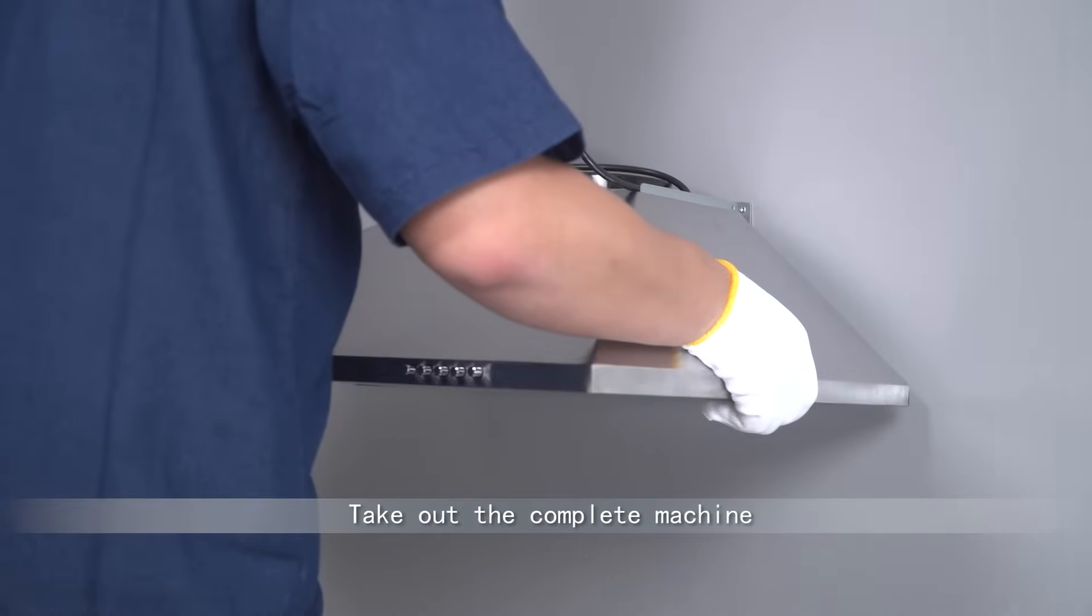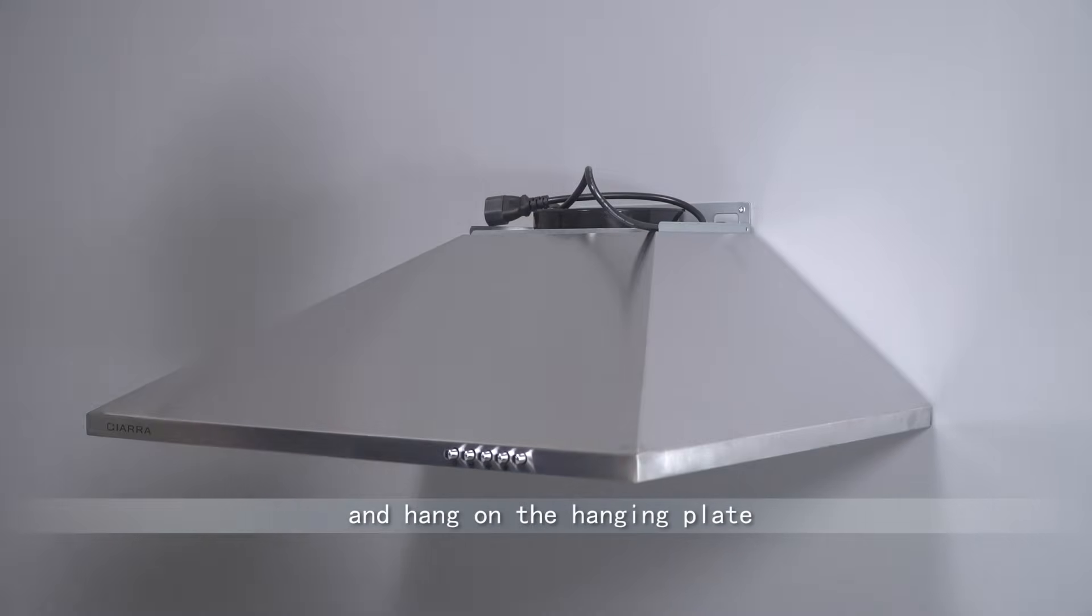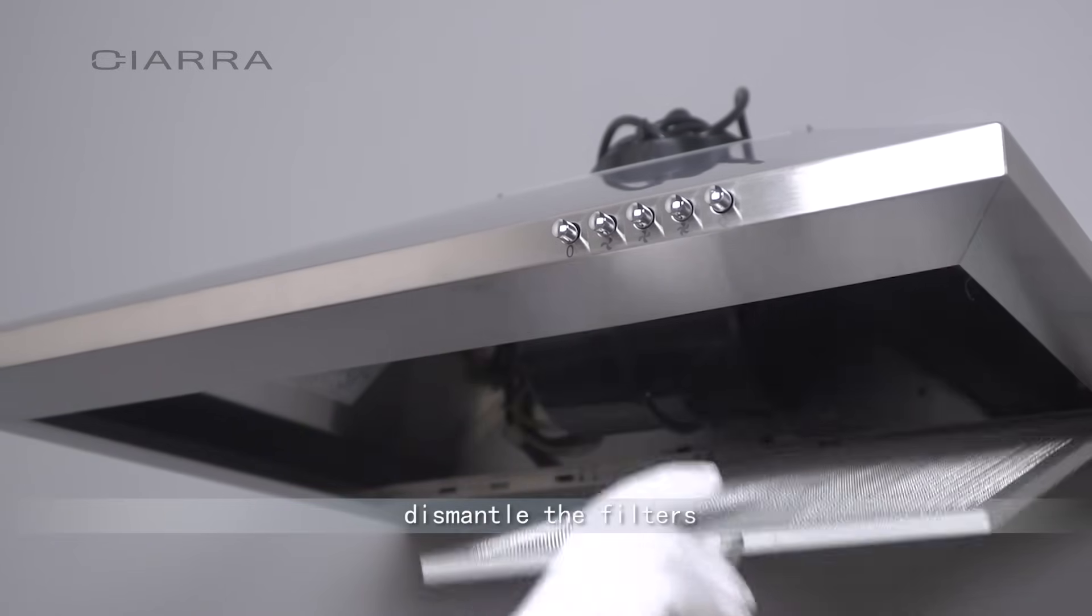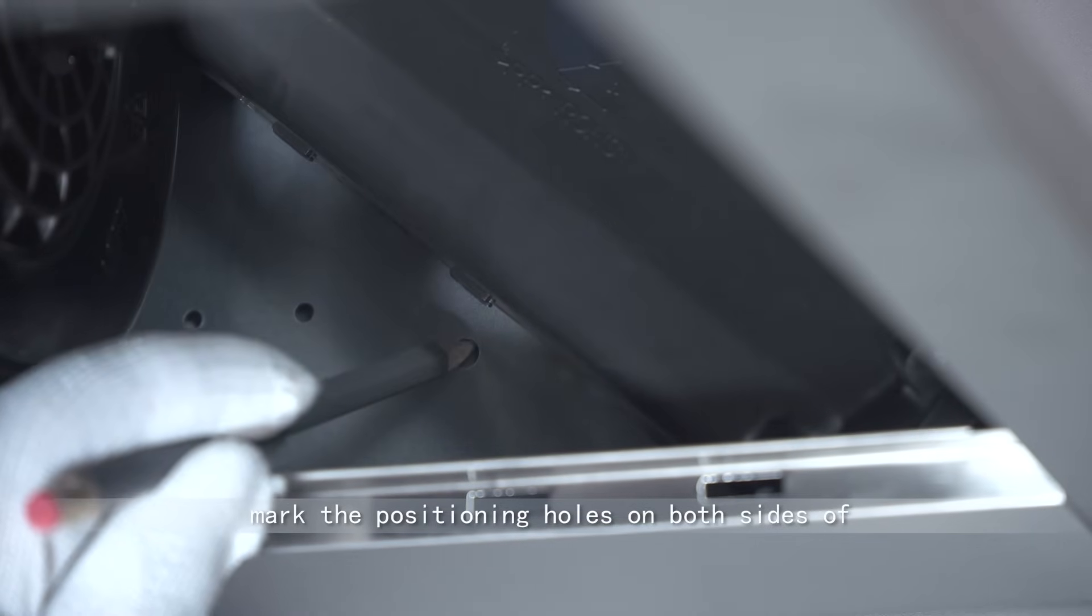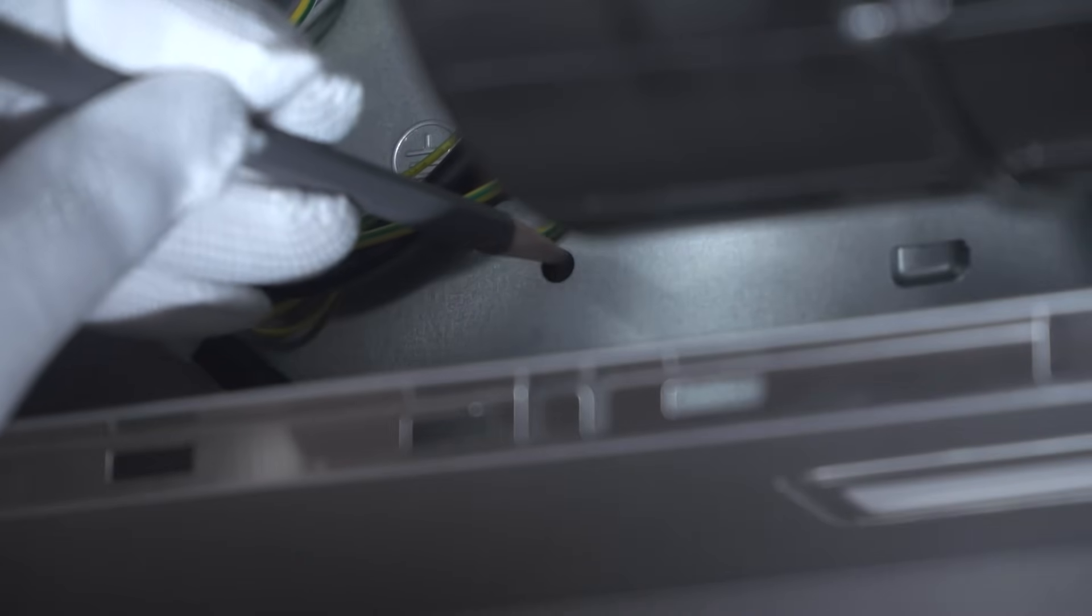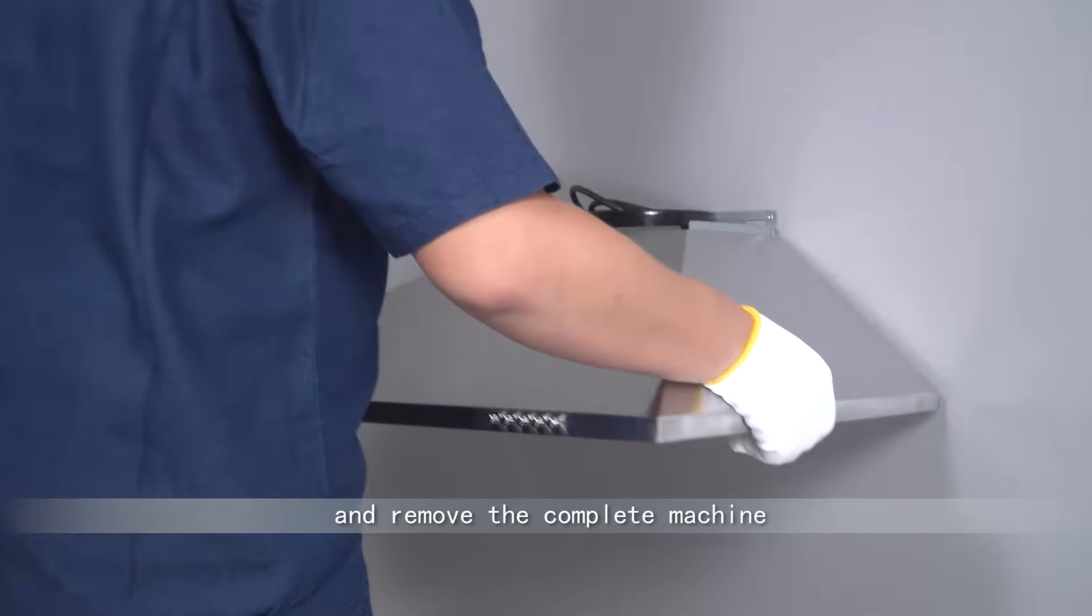Take out the complete machine and hang on the hanging plate. Dismantle the filters, mark the positioning holes on both sides of the inner rear plate with pencil, and remove the complete machine.